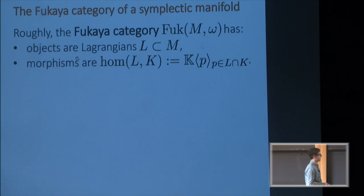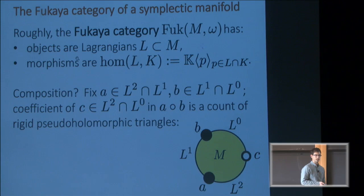As long as your two Lagrangians intersect transversely, HOM from one to the other is a formal sum, or HOMs are formal sums of intersection points. Now in order for this to be a category, you should have a composition operation. Take A and B intersections of L2 and L1, respectively L1 and L0, and C an intersection of L2 and L0. The coefficient of C in the composition of A and B is a count of pseudo-holomorphic triangles.